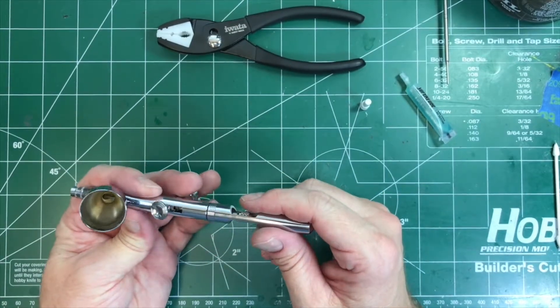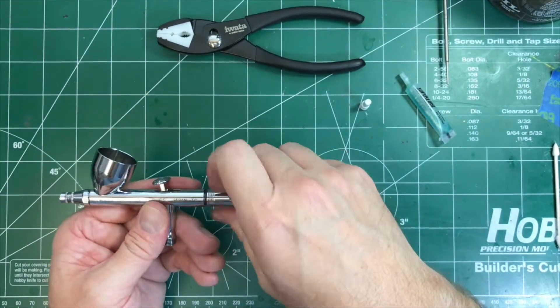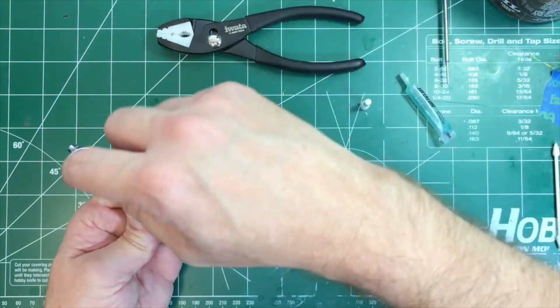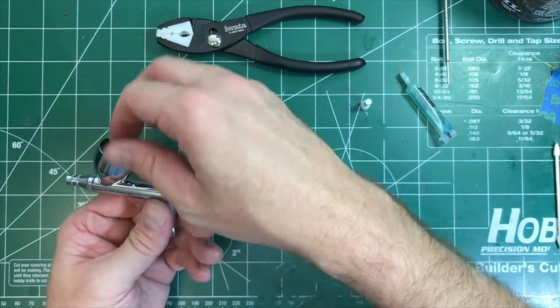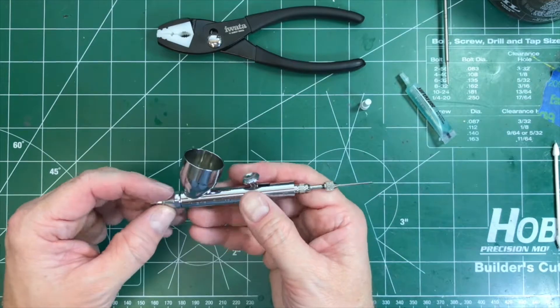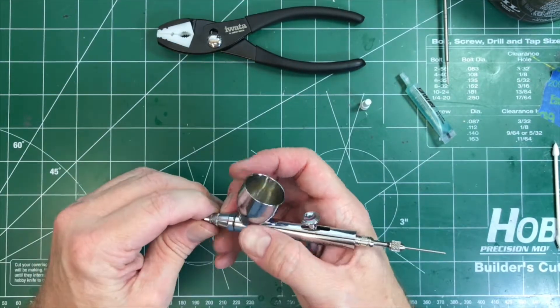All right, so for general purpose cleaning, most of the time you put your solvent in here, brush it around, get it blown out. Sometimes I'll take apart the needle, the housing here, one of the other tools I wanted to show you.